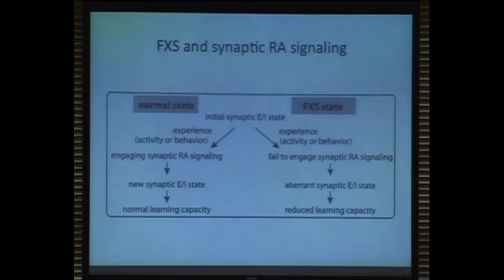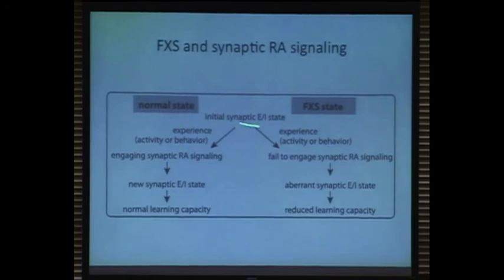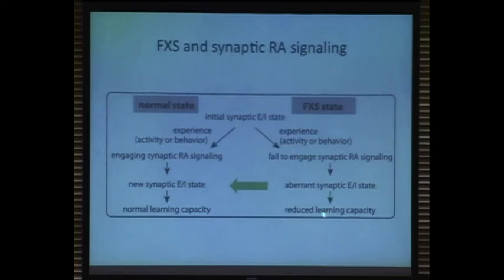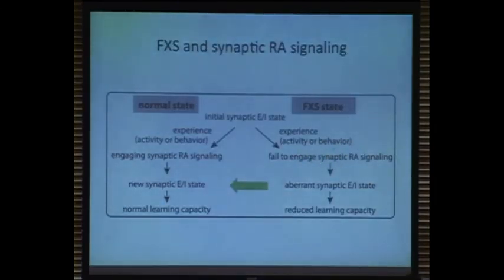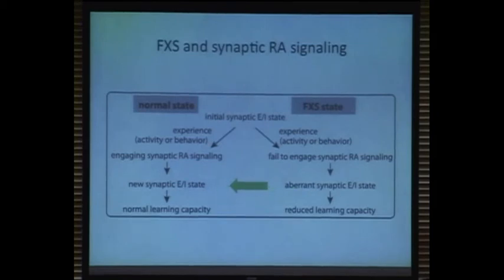This is our revised model of Fragile X. We think the brain actually starts in a normal state. Experience — behavioral experience for the organism, or activity of the neural network — engages synaptic RA signaling that in normal neurons leads to a new state of E/I balance allowing normal learning capacity. But this is lost in Fragile X animals because of the failure to engage RA signaling. Since gene therapy is still a long way to go and we can't put FMRP back into the patient's brain, we can probably intervene by using chemicals and drugs to bring the aberrant synaptic E/I state back to normal and restore learning capacity.